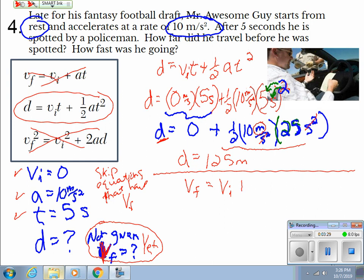V final equals V initial plus A T. Simple. My V initial is 0. So my V final equals 0 plus 10 meters per second squared times my 5 seconds. The seconds cancel out. Now I have my correct unit: meters per second.